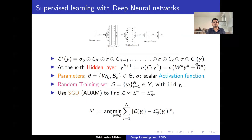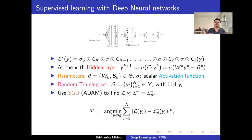Each layer has two pieces: an affine piece consisting of a weight matrix and a bias vector, and then a scalar activation function — a simple scalar nonlinearity. You start with an input, put it through the affine function, compose it with a scalar nonlinearity, then another affine function, the same scalar nonlinearity, and so on. Iterating this process gives you a deep neural network.